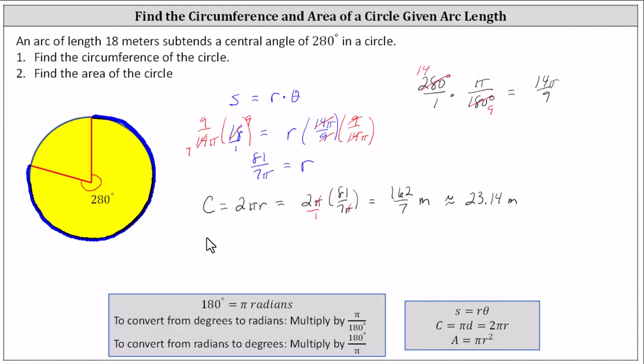Now let's find the area. The area is equal to pi R squared, which gives us pi times the square of 81 divided by seven pi, which equals pi times the square of 81 divided by the product of seven squared and pi squared.